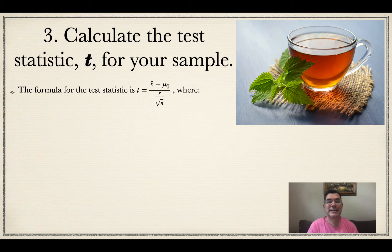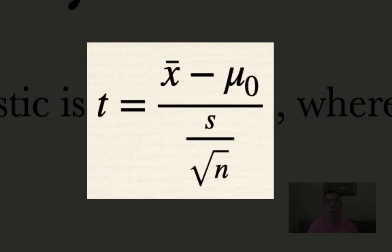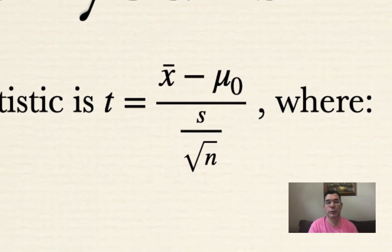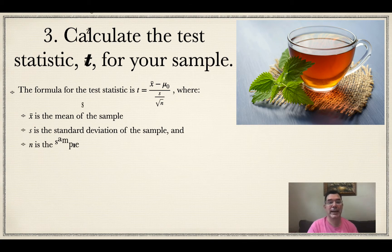Now we're going to calculate our test statistic t. This is the formula for calculating it: t equals x bar minus mu zero over s over root n. x bar in the numerator is the mean of the sample, s in the denominator is the standard deviation of the sample, and n is the sample size. We were told all of those things, so it's just a matter of putting them into the formula.